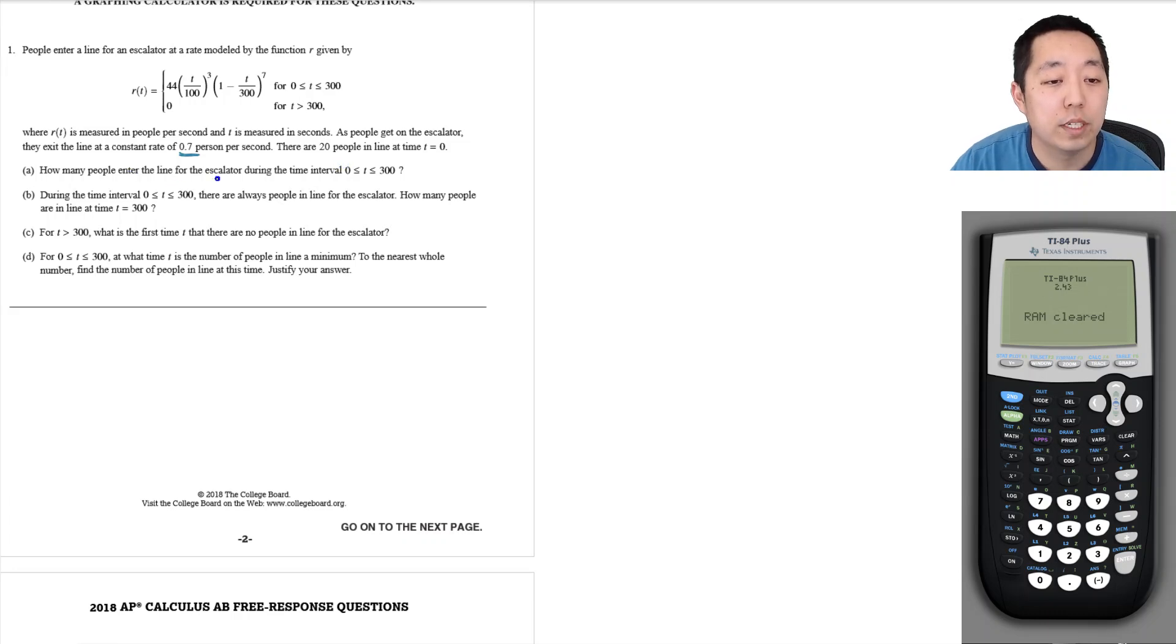Part A: How many people enter the line for the escalator during the time interval? The people that enter the line is the sum of the people by the rate they're entering, so I'm going to do the integral from 0 to 300 of 44t over 100 cubed times (1 minus t over 300) to the seventh dt.